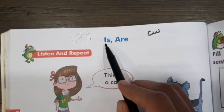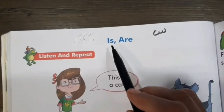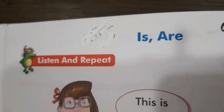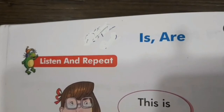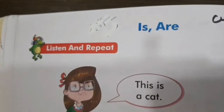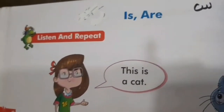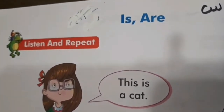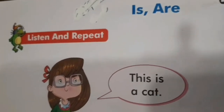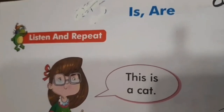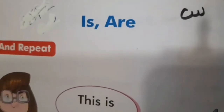Yeh hai 'Is'. Is hum kahaan pe use karte hai? Jahaan hum ek chiz ke baare mein baat kar rahe ho. When we are talking about one thing or one person. Aur 'Are' hum use karte hai jahaan pe hum ek se zyada chiz ke liye baat kar rahe ho. Okay?